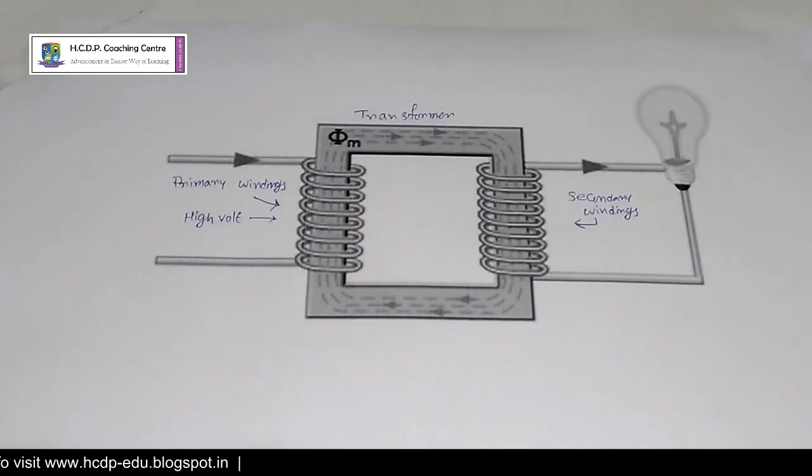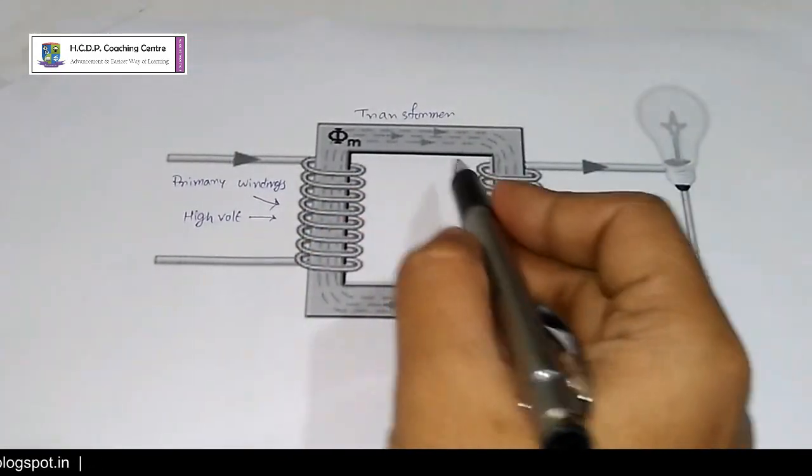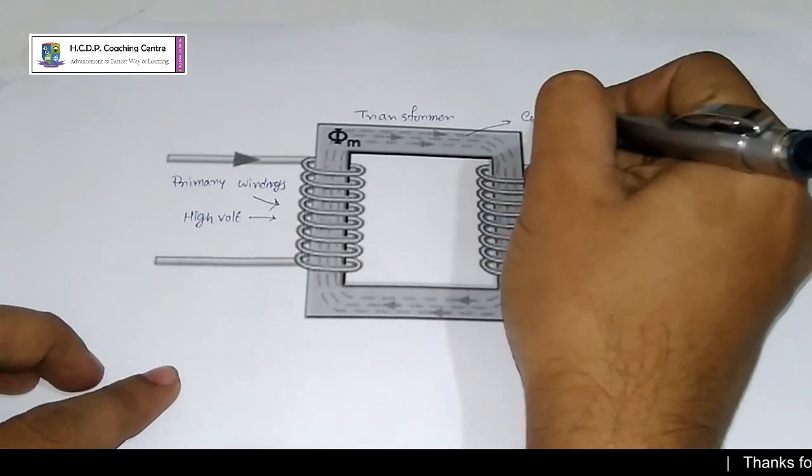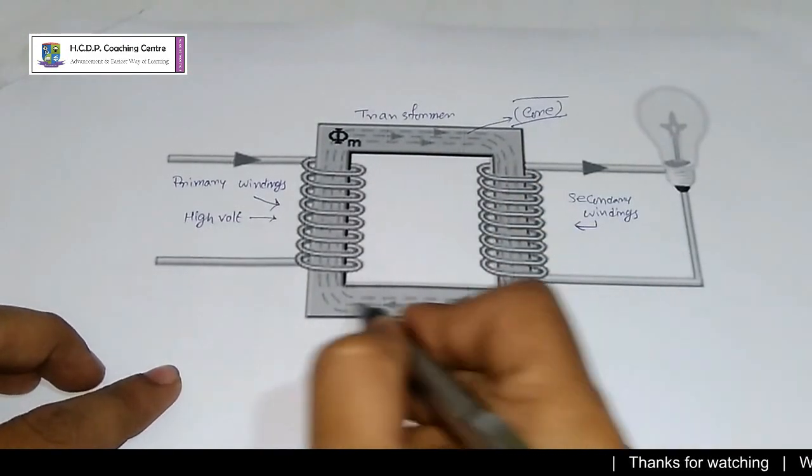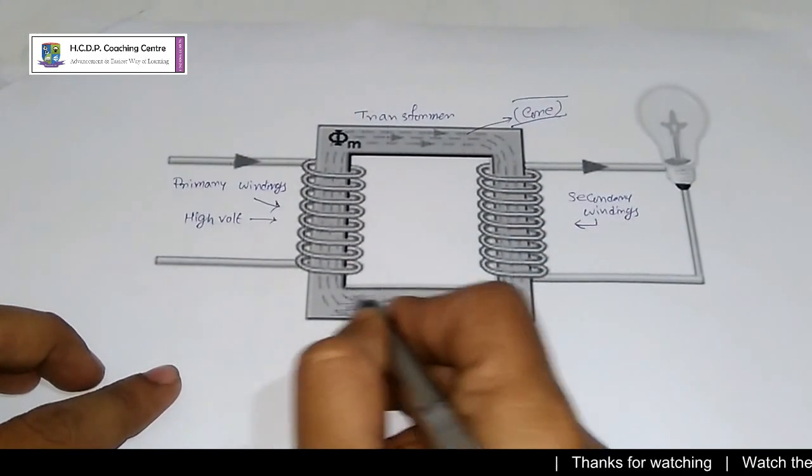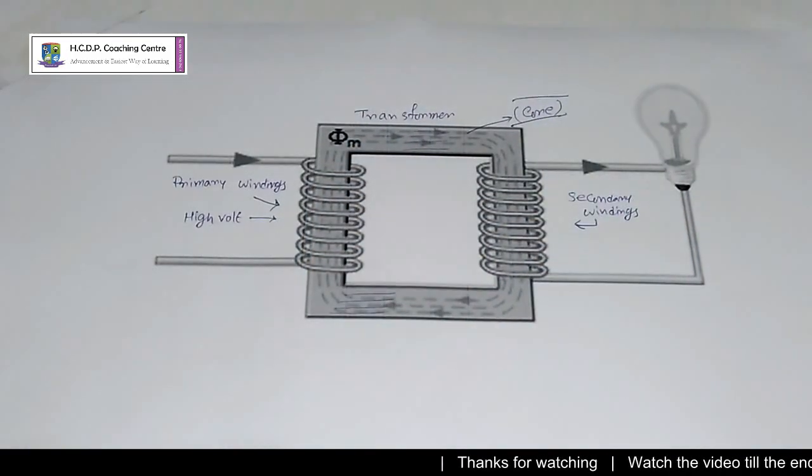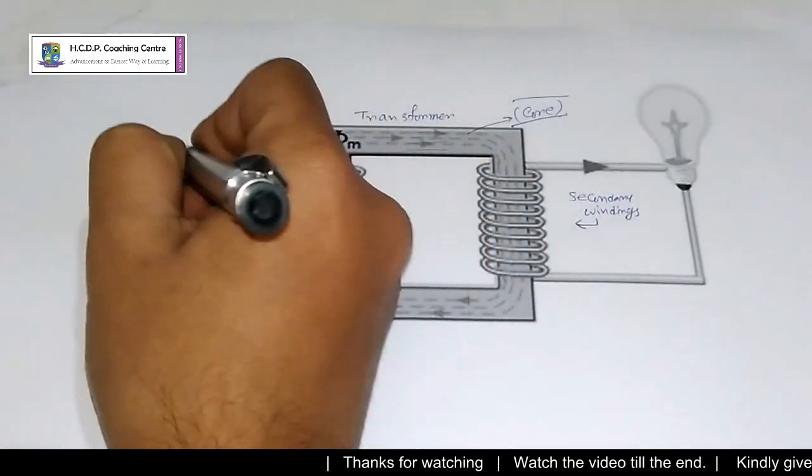These two coils are not in electrical contact with each other but instead wrap together around a common closed magnetic iron circuit called a core. The soft iron core is not solid but made up of individual laminations connected together to help reduce the core losses. The two coil windings are electrically isolated from each other but are magnetically linked through the common core.